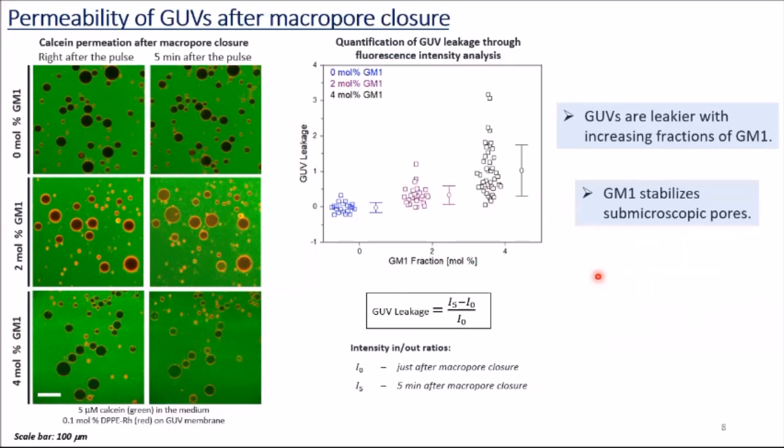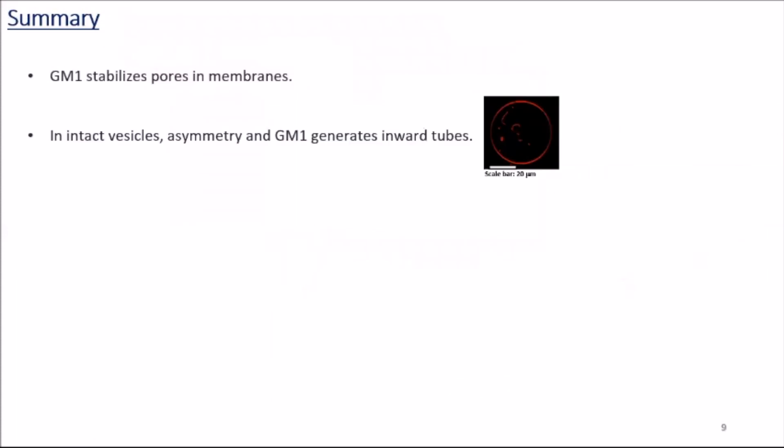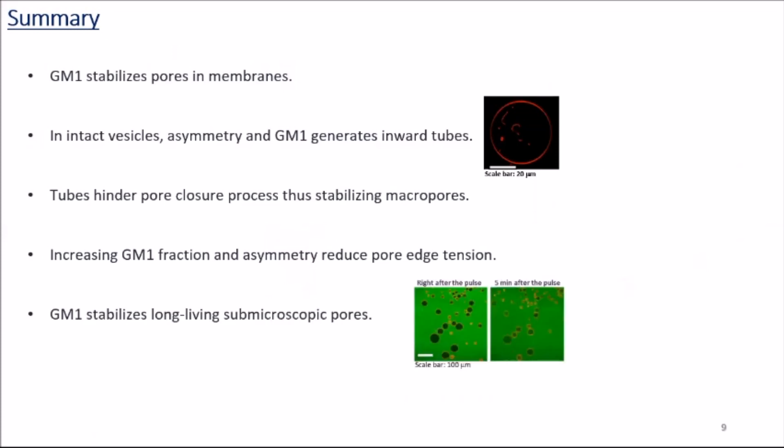Now I can summarize all of my results. GM1 stabilizes pores in membranes. Asymmetry and GM1 generate inward tubes. These tubes hinder pore closure process, thus stabilizing macropores. Increasing GM1 fraction and asymmetry reduce pore edge tension. GM1 stabilizes long-living submicroscopic pores and makes GUVs leakier.